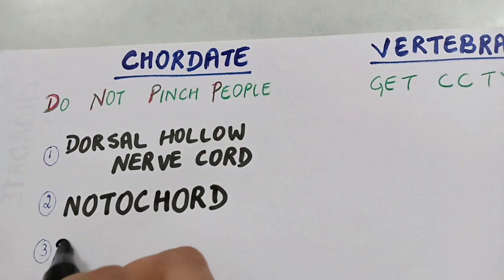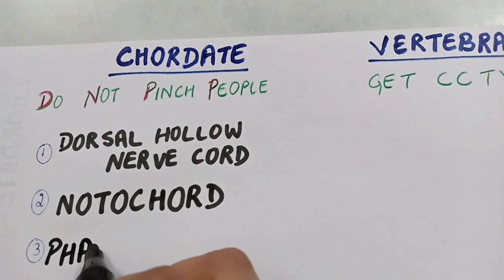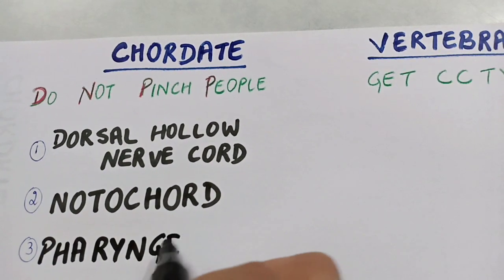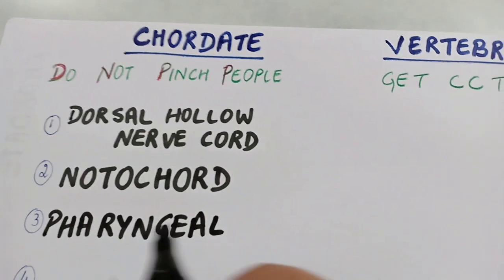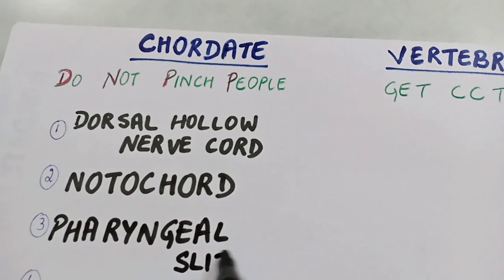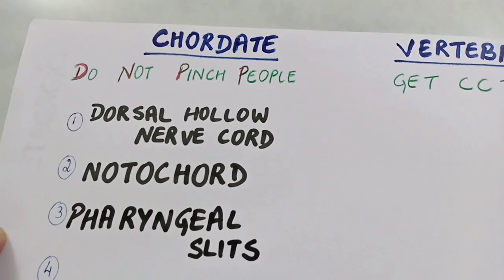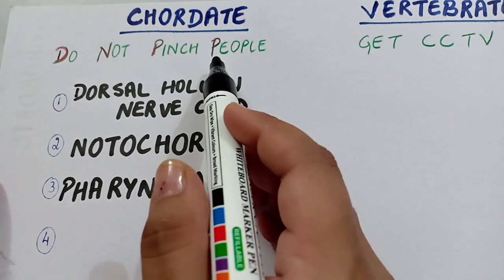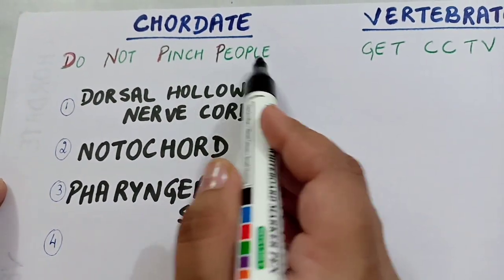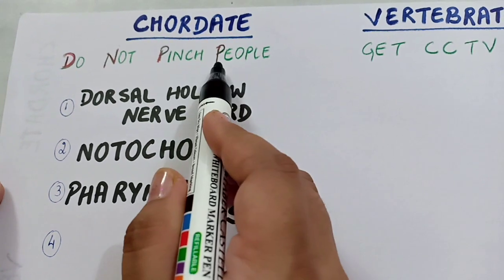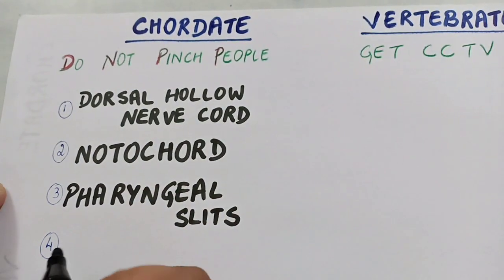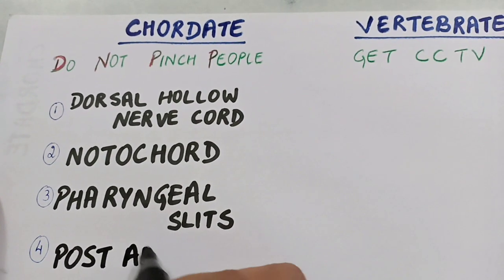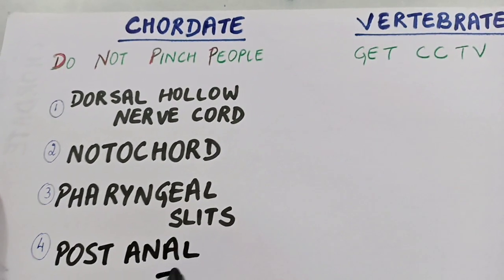Then the word 'Pinch' — P and N — will remind you of pharyngeal slits, so all chordates have pharyngeal slits. And the last word 'People' — with this P we have to remember that they have a post anal tail.